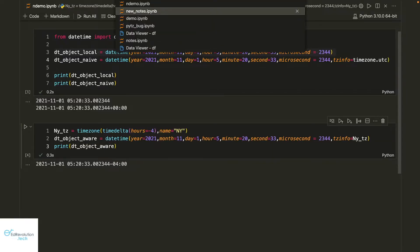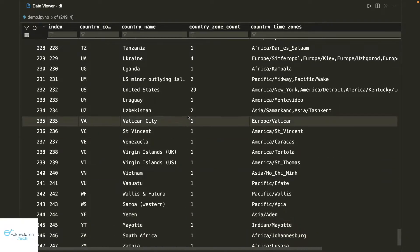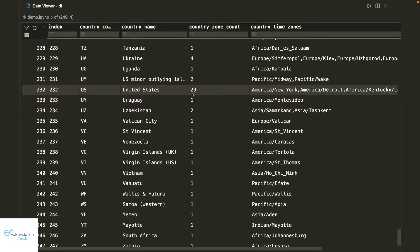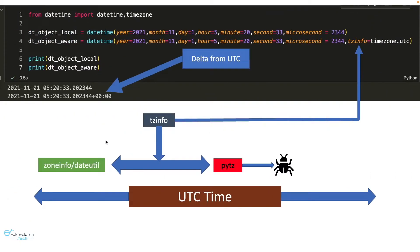A problem with the manual approach is that there are about 248 countries in the world, and some countries have multiple timezones — for example, the United States has 29 timezones. There are also historical time changes and daylight saving times involved. So we always use libraries like zoneinfo, dateutil, and pytz to get the timedelta information. However, if you want to provide timezone info in the tzinfo argument, always use either zoneinfo or dateutil — never use pytz directly, as it may lead to bugs.